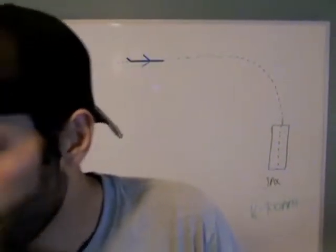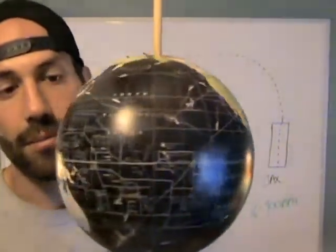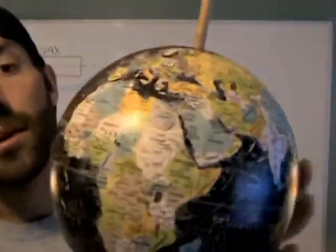Our Earth, our model shows that it's spinning from west to east around an axis, which is represented by this little stick. And the circumference of the Earth at the equator, right here, is 24,901 miles.